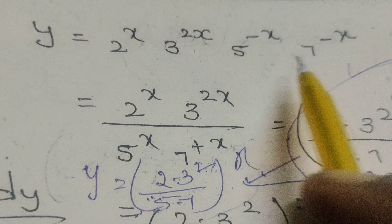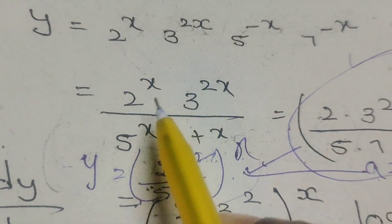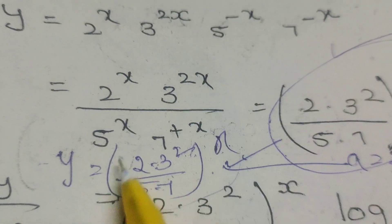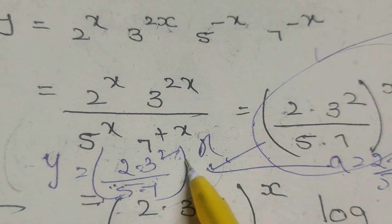Now, differentiate this. First of all, write 2 power x, 3 power 2x by 5 power plus x, 7 power plus x.